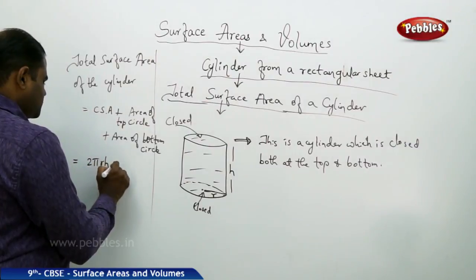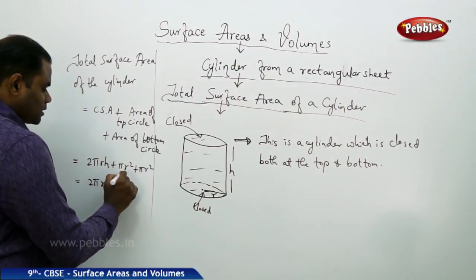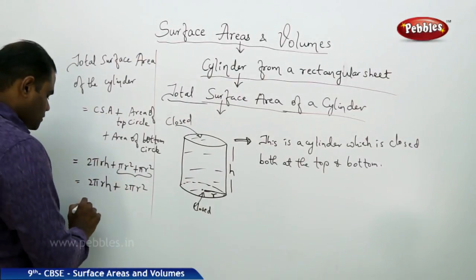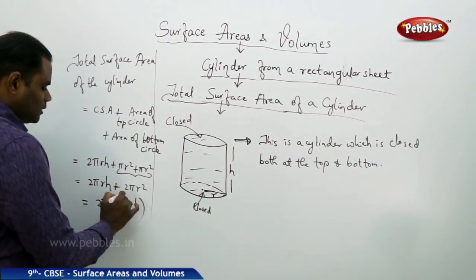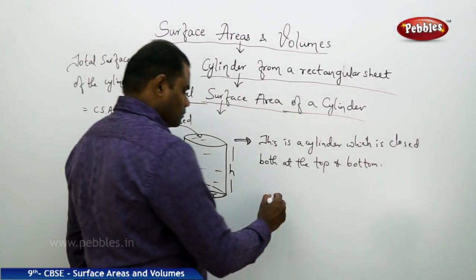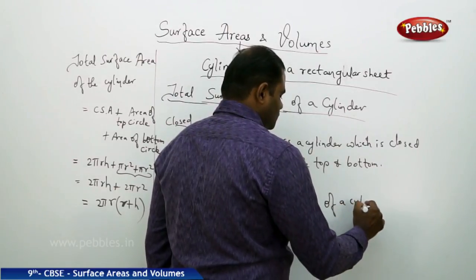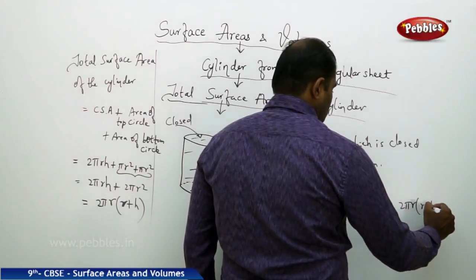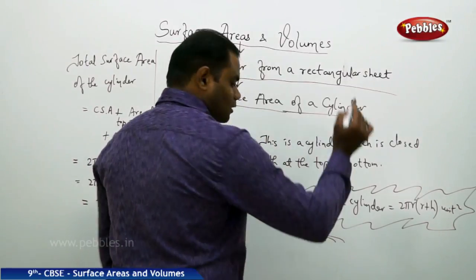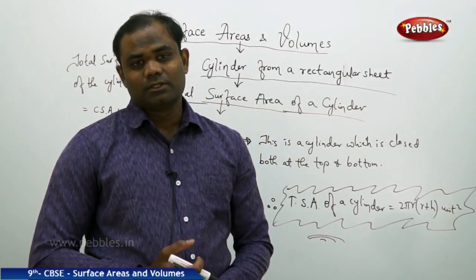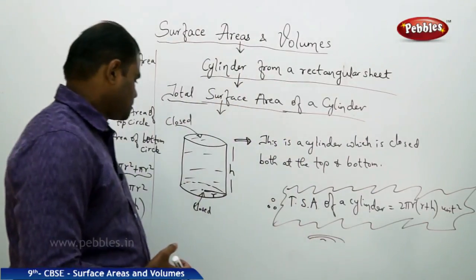So total surface area is 2πrh + πr² + πr². This simplifies: πr² + πr² = 2πr². Taking 2πr common gives 2πr(r + h). Therefore, total surface area, denoted TSA of a cylinder, is 2πr(r + h) square units, where r is the radius and h is the height of the cylinder.